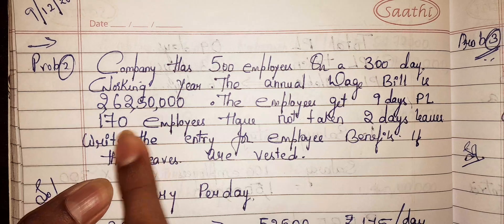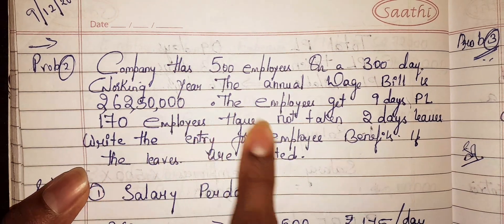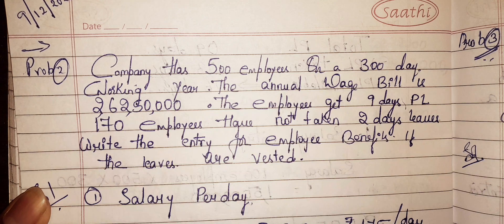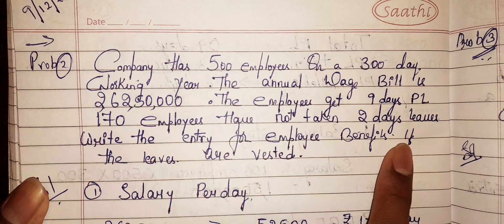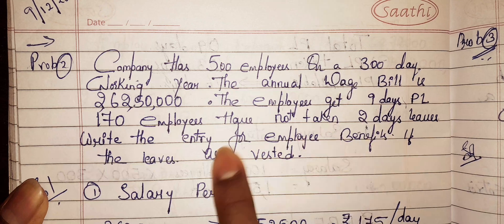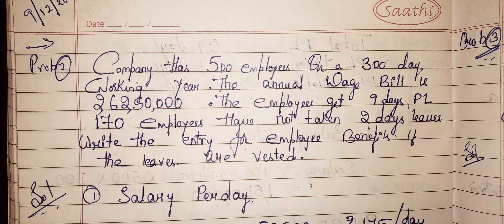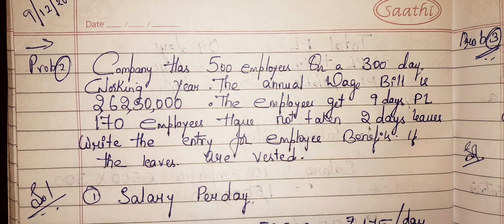170 employees have not taken 2 days leave. We need to write the journal entry for employee benefits when leaves are vested. Vested means the payment is made immediately.